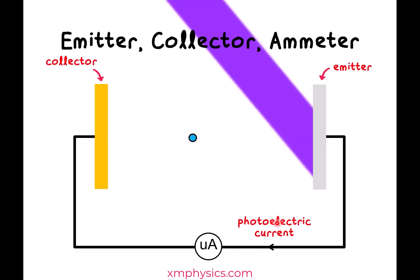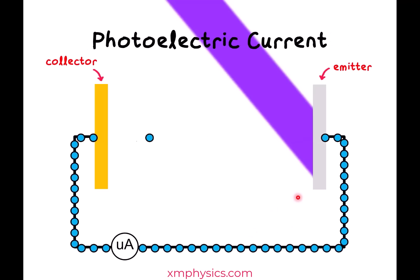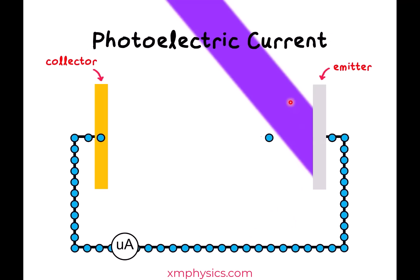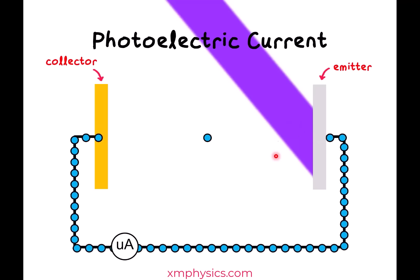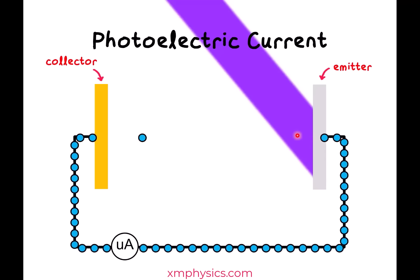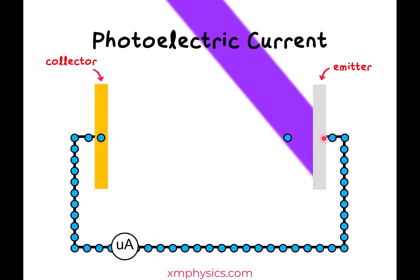Where does this current come from? The photoelectrons that are emitted from the emitter get collected at the collector and it completes the electric circuit. So we've got electrons flowing one way, which means a conventional current — the photoelectric current — flowing the other way.